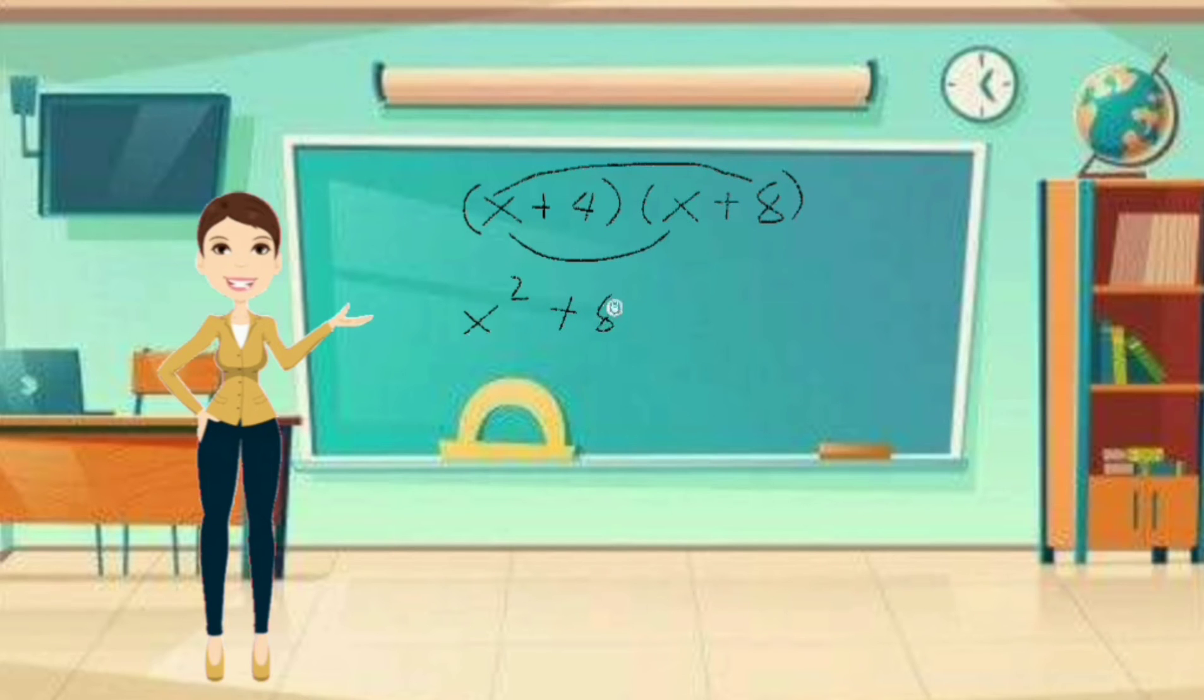And then, we multiply the inner terms, 4 times x is equal to 4x. Lastly, we multiply the last terms, 4 times 8, which is equal to 32.